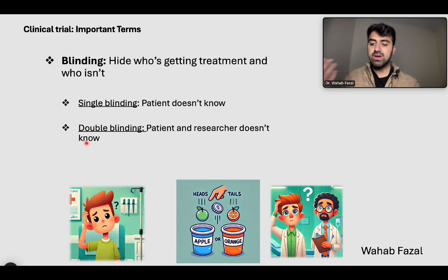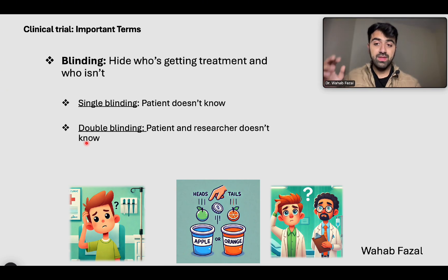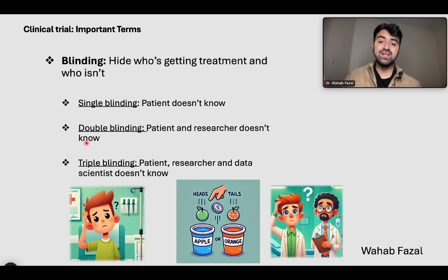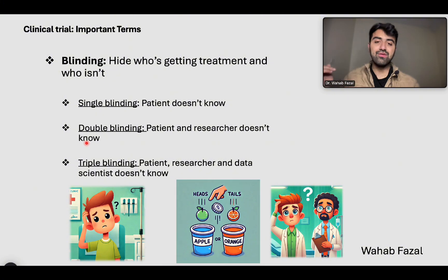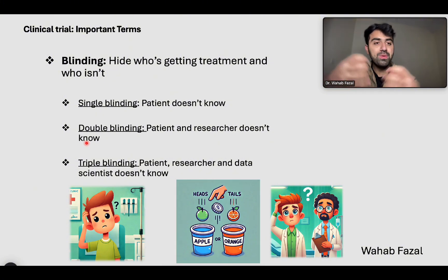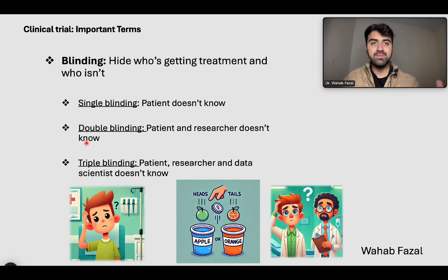Someone noted there might still be bias because the data scientist doing the analysis at the end might be biased too. So that leads to triple blinding, meaning the patient, the researcher, and the data scientist all three don't know. After the data analysis is done, there is a key which opens up the results and reveals who got the treatment and what the difference between the two groups was.